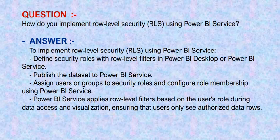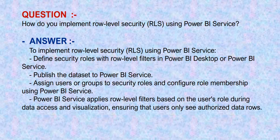Our next question is: how do you implement row level security RLS using Power BI Service? Your answer should be: to implement row level security RLS using Power BI Service, define security roles with row level filters in Power BI Desktop or Power BI Service. Publish the dataset to the Power BI Service. Assign users or groups to security roles and configure role membership using Power BI Service. Power BI Service applies row level filters based on the user's role during data access and visualization, ensuring that users only see authorized data.